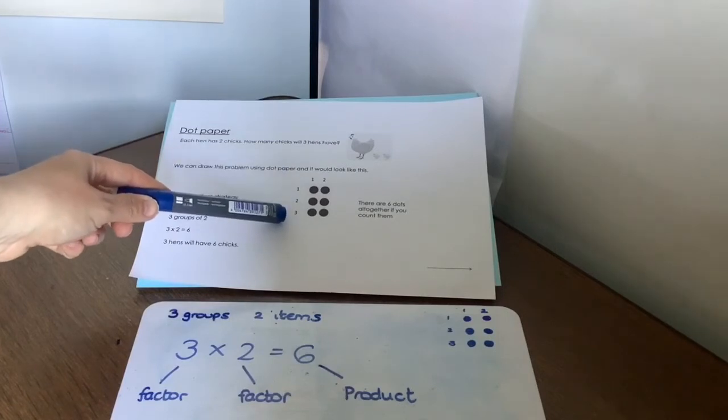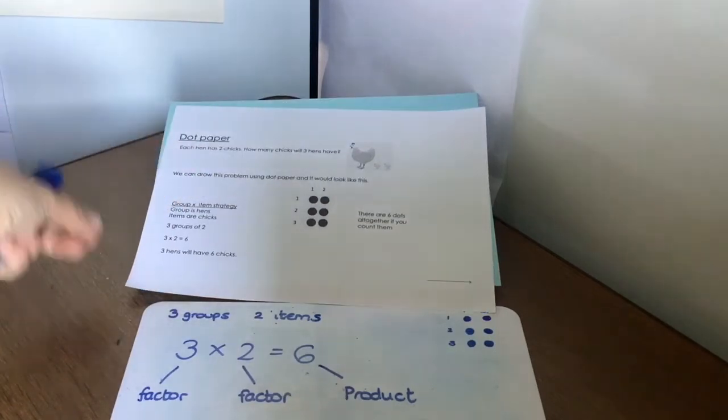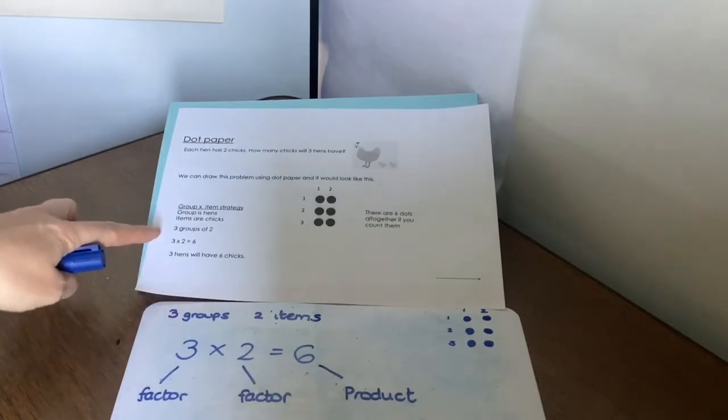So let's have a look. We have our dot paper. There's our 3 groups. And there's our 2 items. So 3 groups of 2. 3 times 2 is 6.